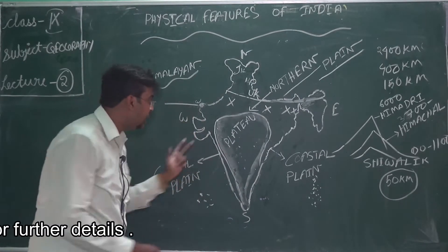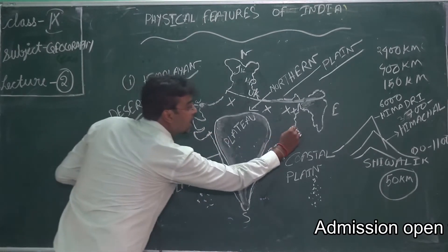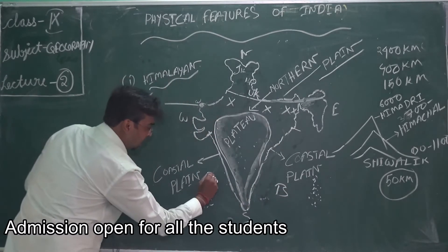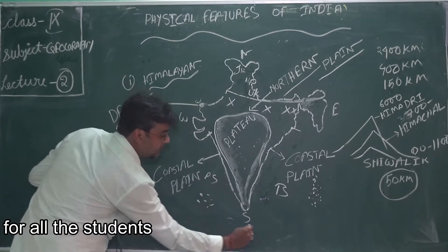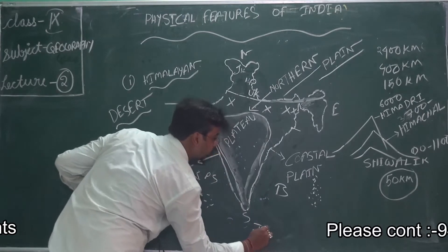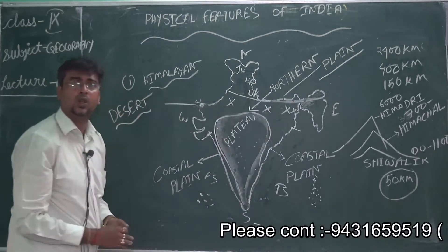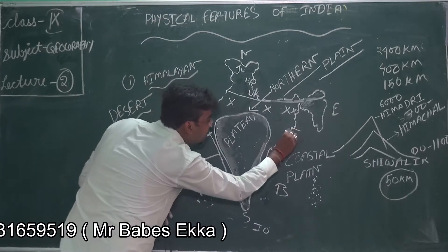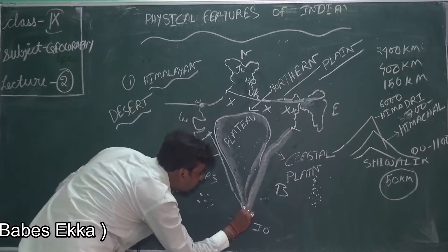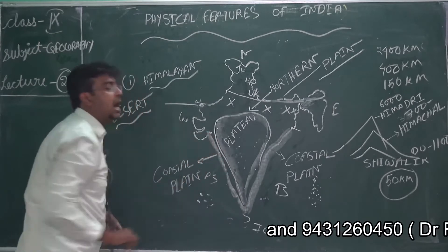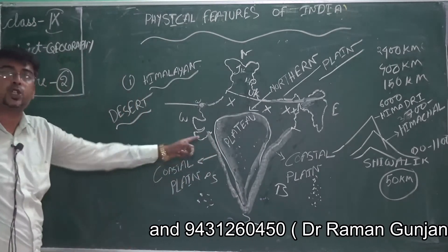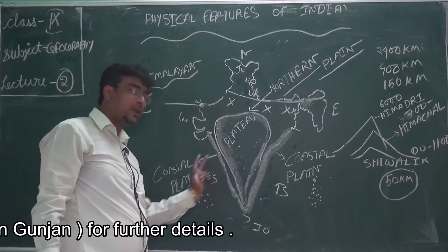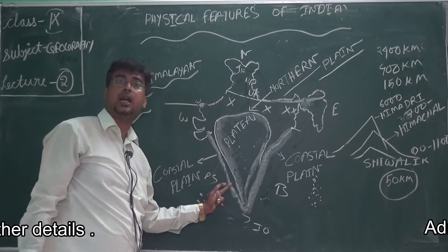Then you come to the coastal area. Our India — this portion to that portion — here is the Bay of Bengal, here is the Arabian Sea, here is the Indian Ocean. Besides the ocean, the land mass area — that portion besides the ocean — is known as the coastal area. That is also a plain area besides the plateaus.